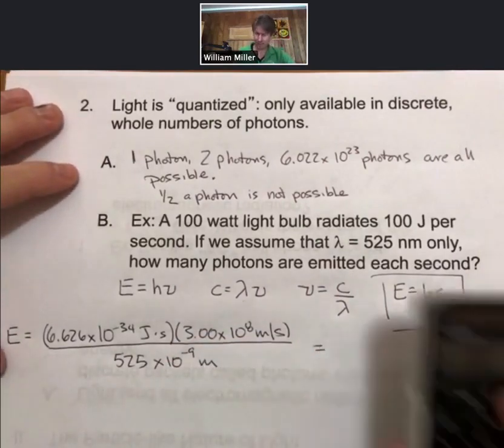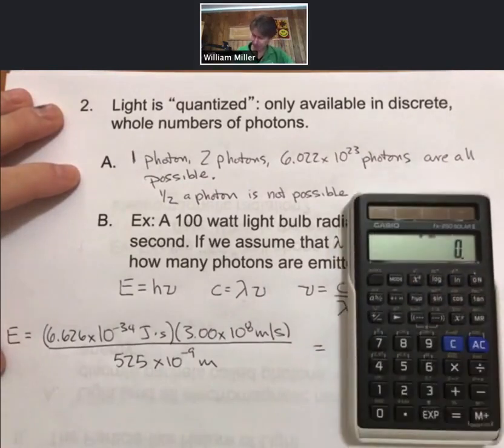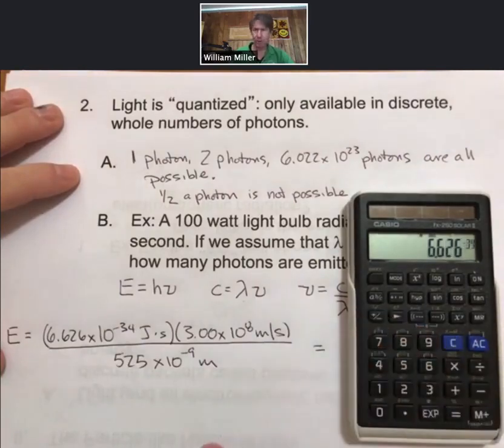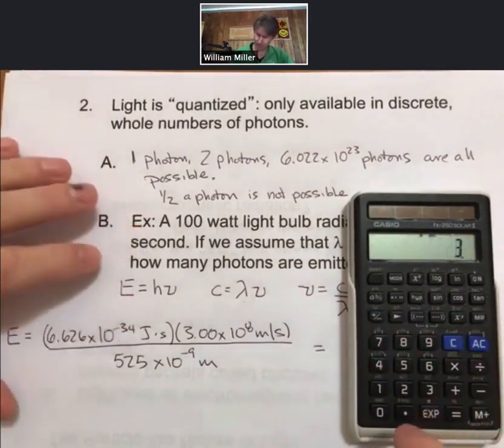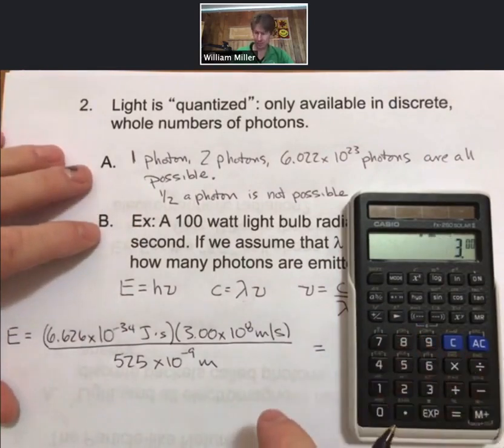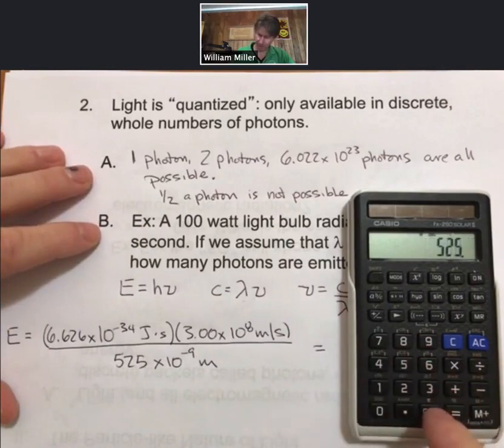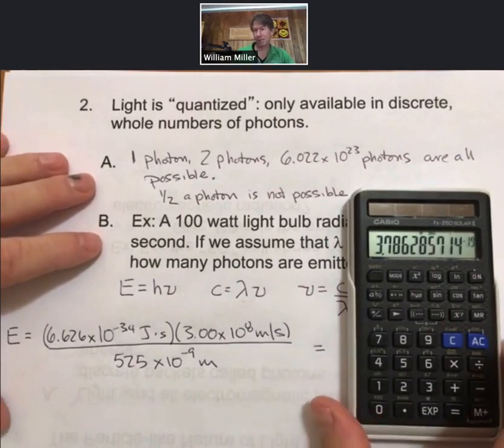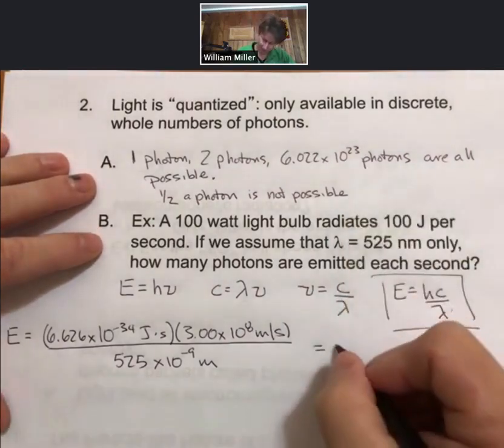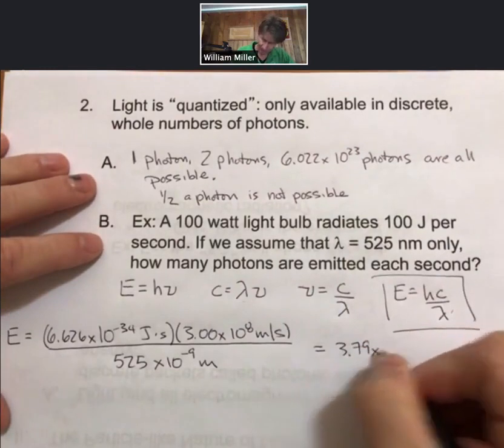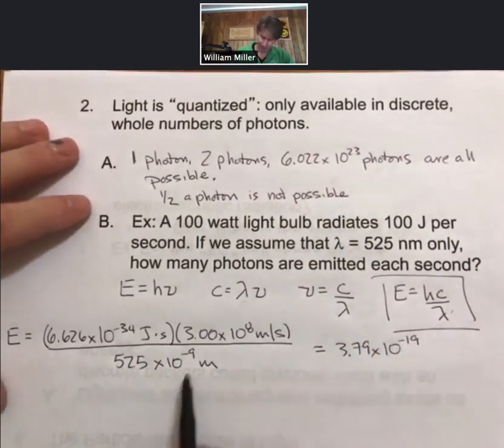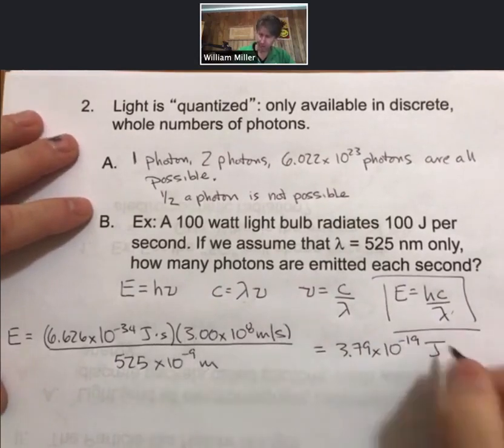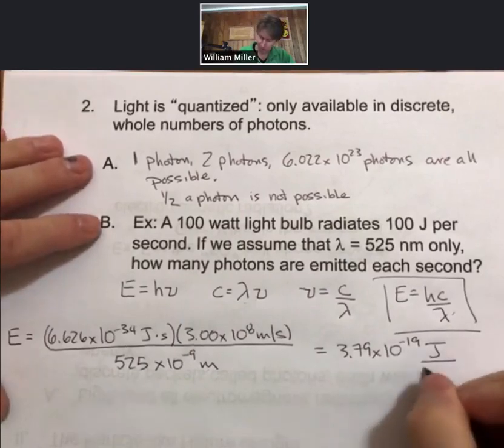When I do this, I get 6.626 times 10 to the negative 34th, times 3.00 times 10 to the 8th, divided by 525, exponent 9 minus, I get 3.79 times 10 to the minus 19th as the number. And we see that our meters cancel out, and our seconds cancel out. So our units here are joules, or as we've already discussed, joules per photon.